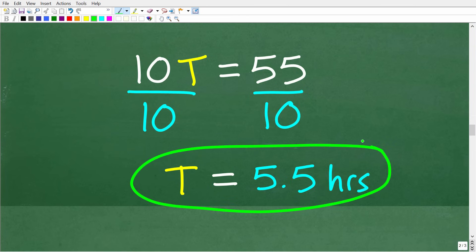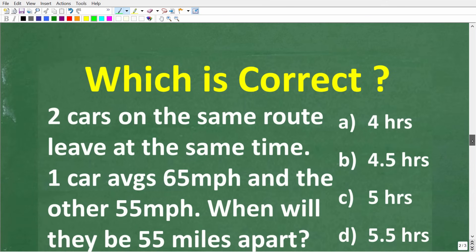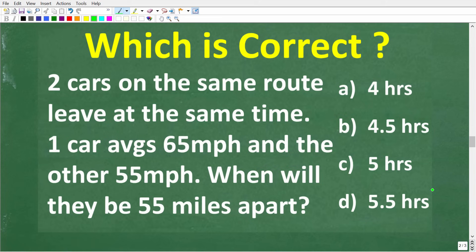Okay, and this makes sense because, again, if the relative difference of these cars pulling away is 10 miles per hour, in 5 hours, they'll be 50 miles away from one another. But we're looking for the time when they are 55 miles away. And, of course, the correct answer here is D.